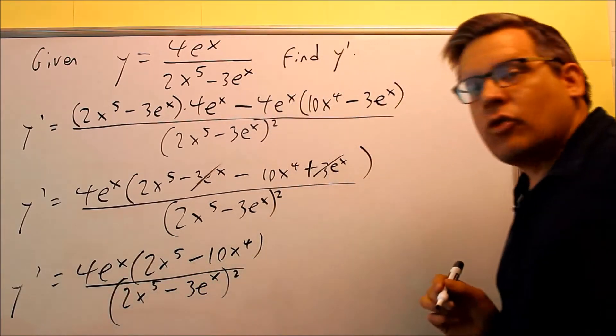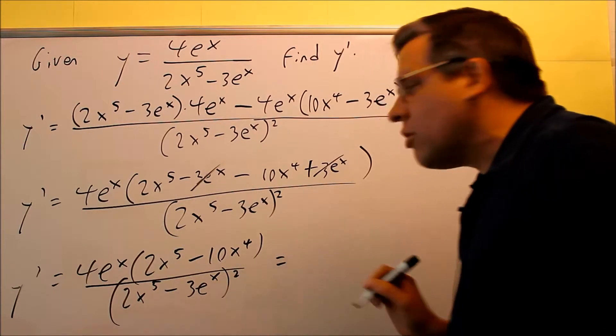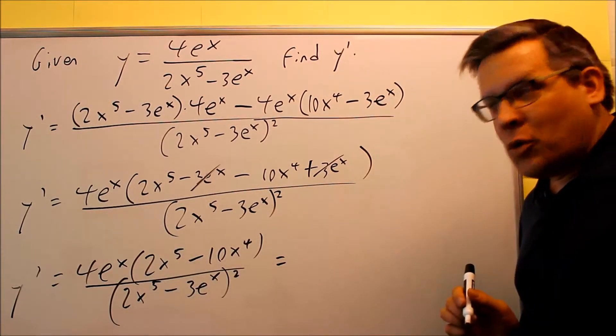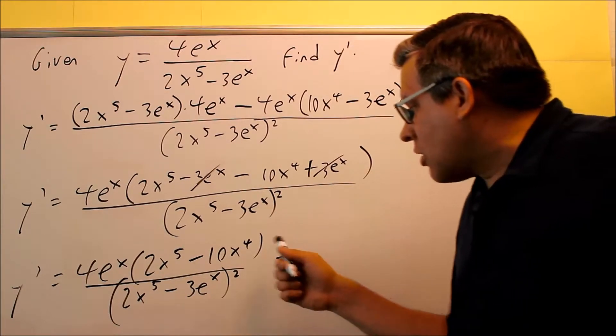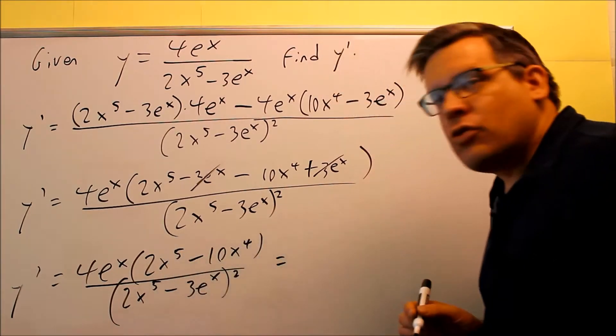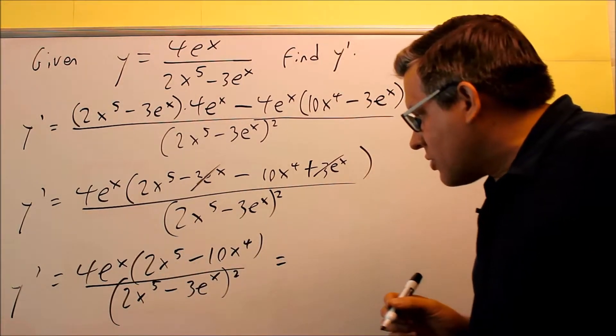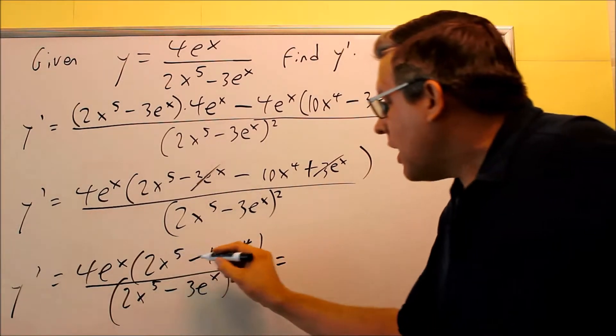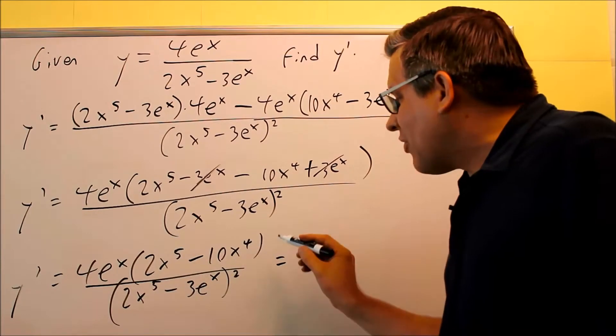The one last thing, if you want to factor it completely, there is one more step that you can do here. There is a 2 that you can pull out of both of those. In fact, there's also an x to the 4th you can pull out as well. So I'm going to factor out a 2x to the 4th power. If I factor that out,